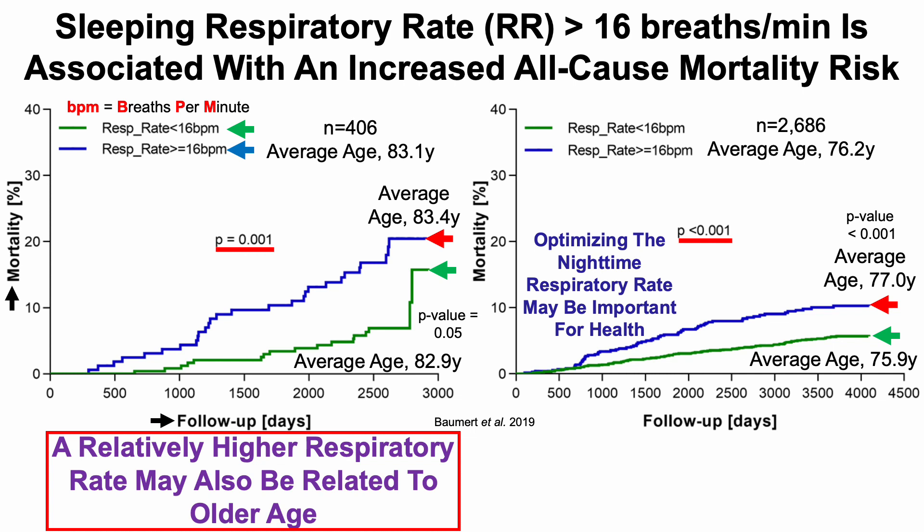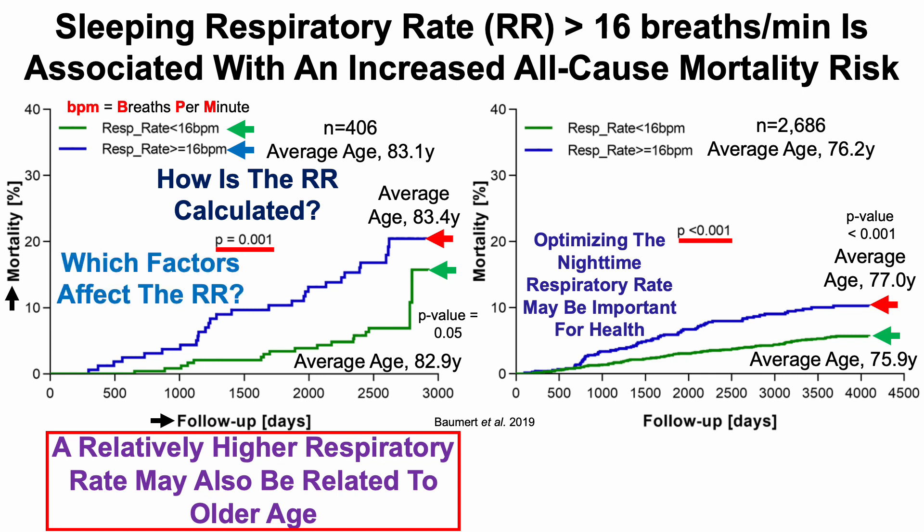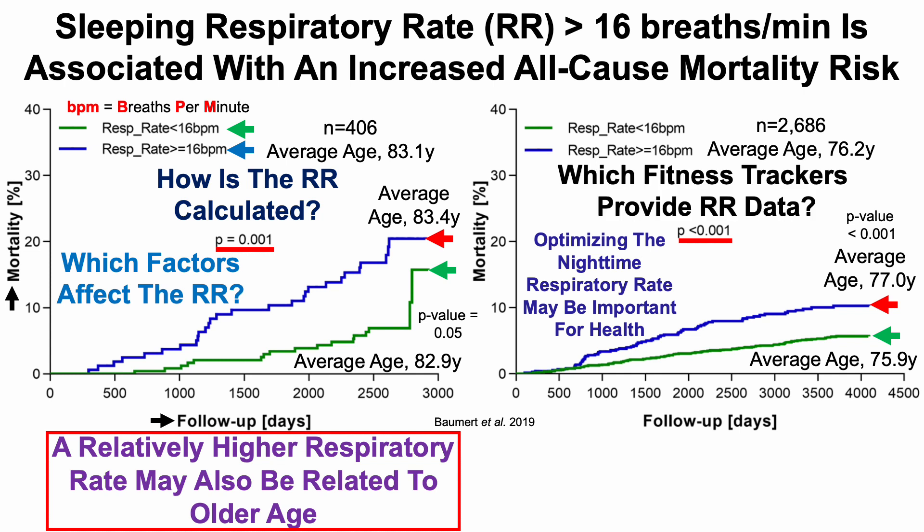There are several questions to address here. First: do these data indicate that optimizing the nighttime respiratory rate while sleeping may be important for health? With that in mind, how is the respiratory rate calculated? Which factors affect the respiratory rate besides potentially advanced age? Which fitness trackers provide respiratory rate data so that we can track and potentially optimize it? And last but not least, what's my own data?